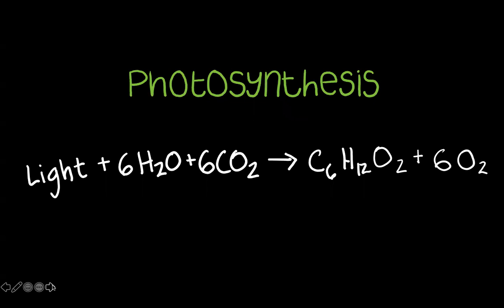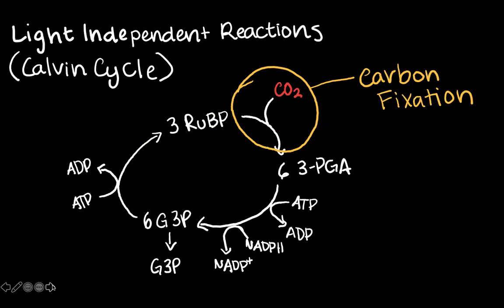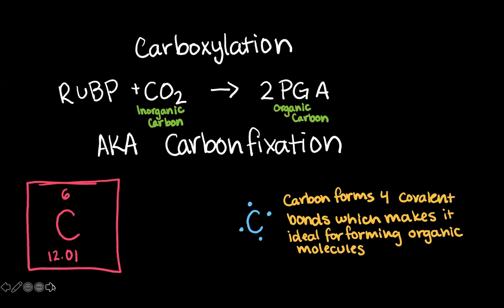We all know the equation for photosynthesis, where you have light, water, and carbon dioxide, and it makes sugar and oxygen. We have the light-dependent reactions, where the light and the water are involved, and the light-independent reactions. This part is called the Calvin cycle. And I want to focus on this step that I've circled in yellow here, where the carbon is introduced into the process. This step is called carbon fixation or carboxylation.